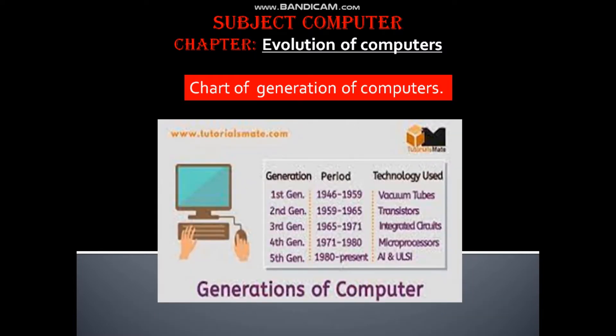This is the chart of generation of computer: the first, second, third, fourth, and fifth generation, with their time periods and technologies used — vacuum tubes, transistors, integrated circuits, microprocessors, and VLSI.